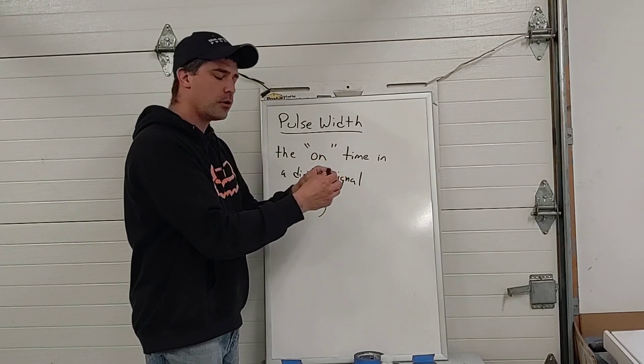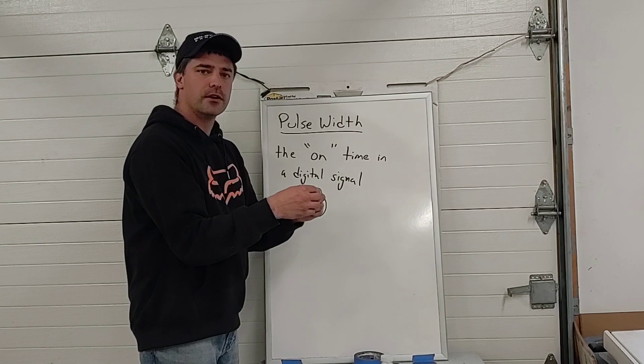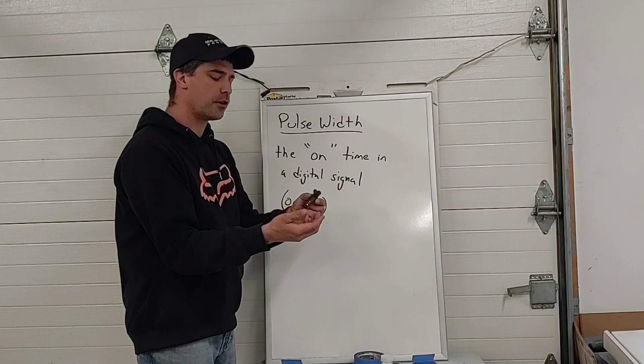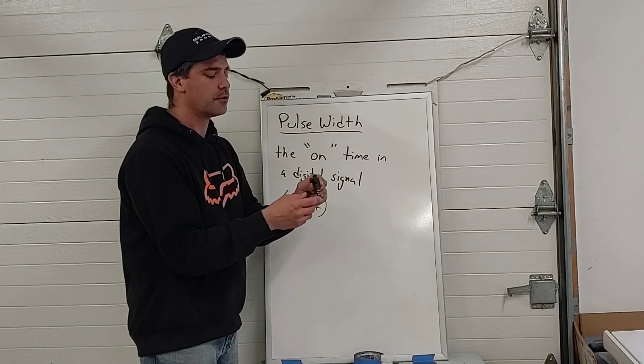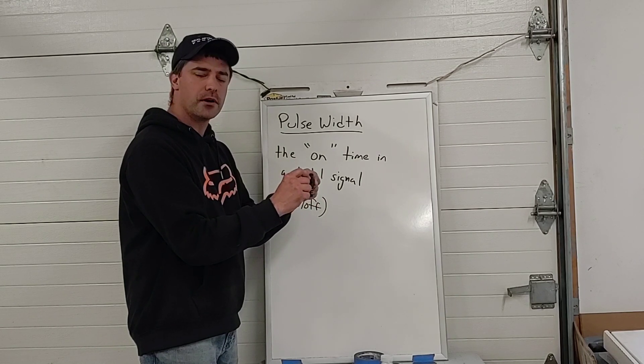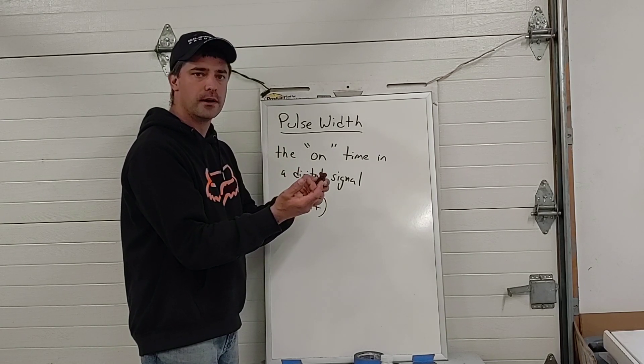The way that the computer has control over how much fuel the engine gets is by altering this pulse width or altering the on time of the fuel injector. So a short on pulse is going to deliver obviously less fuel than a longer pulse.